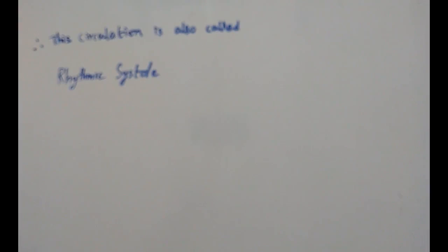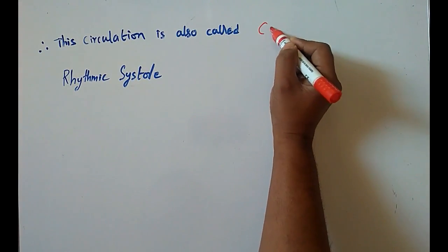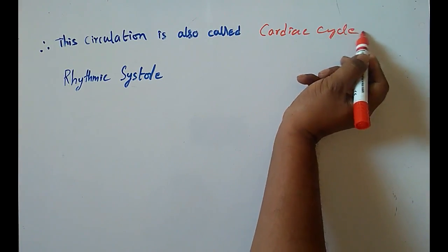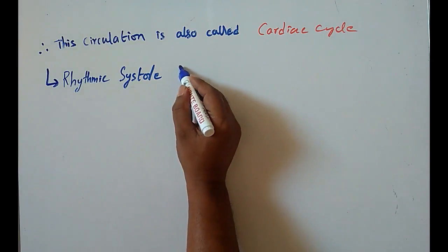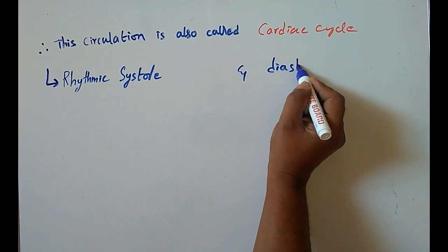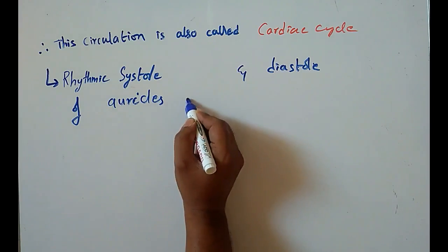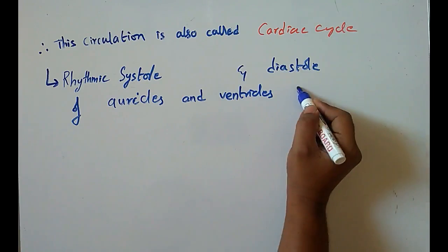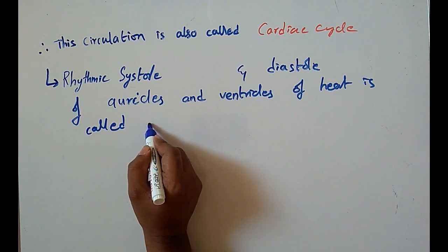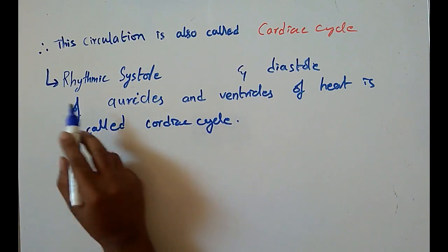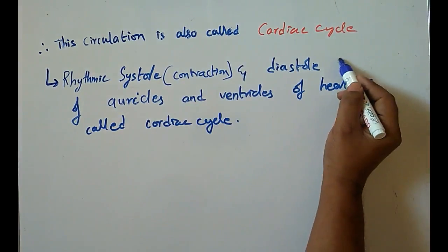This circulation is also called the cardiac cycle. The cardiac cycle is defined as the rhythmic systole and diastole of the auricles and ventricles of the heart. Systole means contraction and diastole means relaxation.